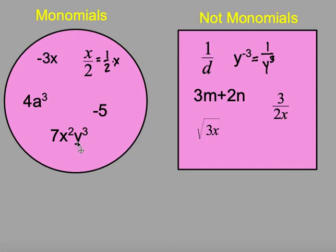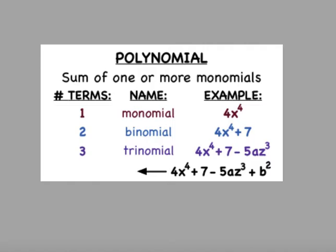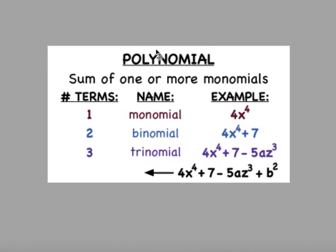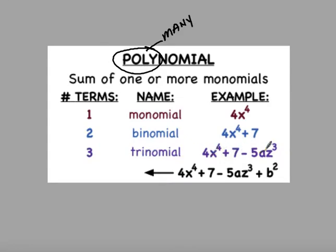I hope that differentiates what is classified as a monomial and what is not. Now we're going to dig deeper and talk about a polynomial. The prefix poly simply means many, so a polynomial means many terms — though it could be as small as one term and be a monomial. Two terms separated by addition or subtraction makes a binomial. A trinomial has three terms, and anything beyond that we simply call polynomials. If it has one, two, or three terms, we give it a special name.